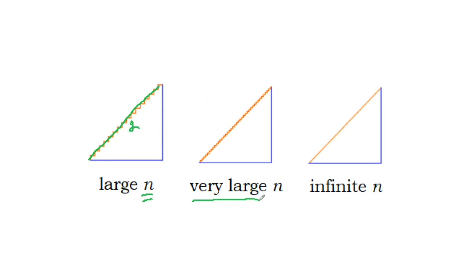For very large N, the staircase curve will look a lot like the diagonal, and yet its length is still 2. As N grows larger and larger, and it goes to infinity, the staircase path that you see here flattens out into the diagonal and becomes the diagonal.